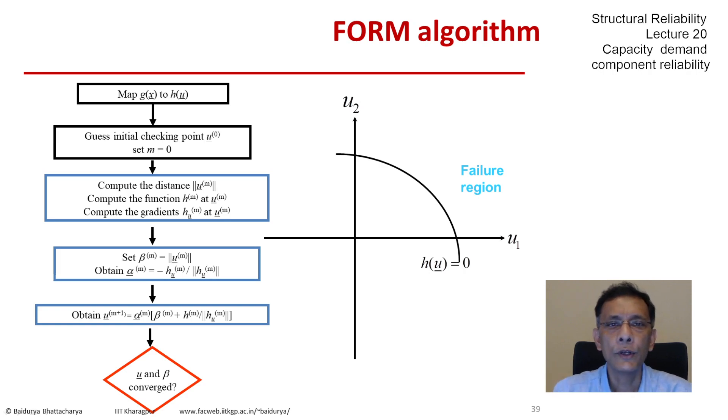We do this until u and beta converge. If the answer is yes within whatever tolerance we have decided, we stop. Otherwise, we increase the counter by one, so m becomes m plus one, and we repeat the process until convergence happens. Hopefully, convergence will occur.